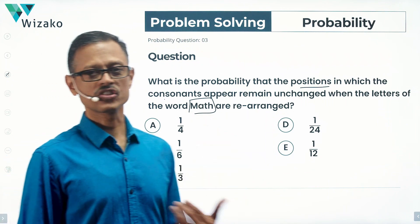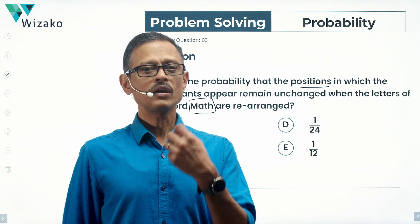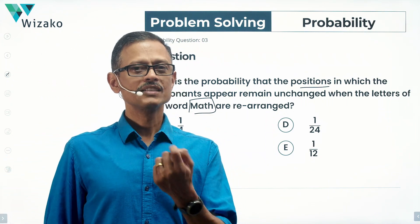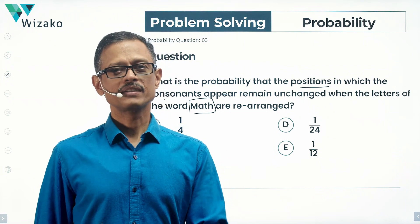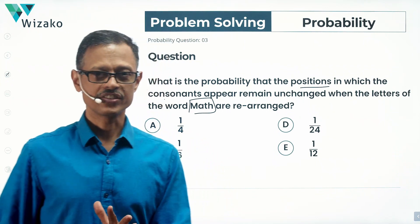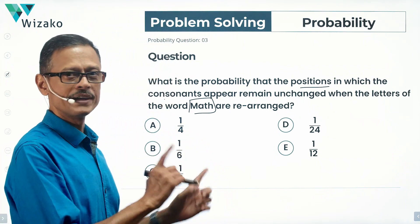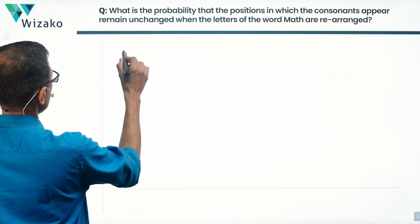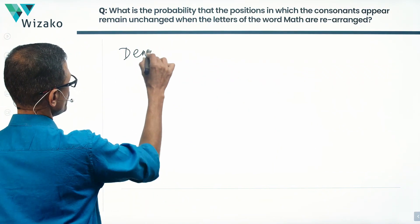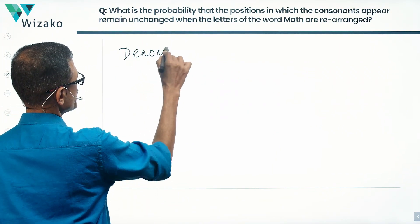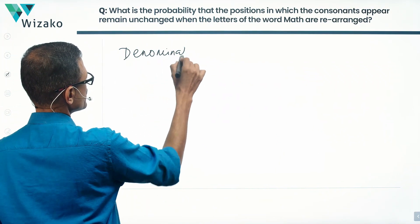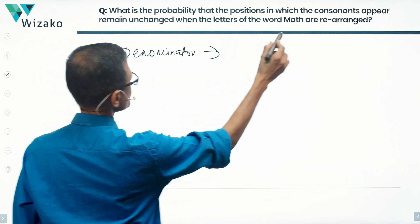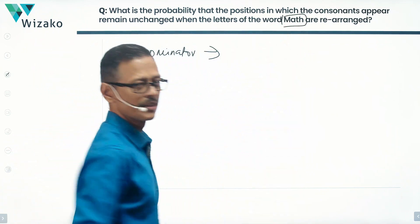We're going to rearrange the letters of the word MATH. We want to find the probability that the positions in which the consonants appear remain unchanged. It's a probability question, so we need to compute a denominator and a numerator. Let's start with the denominator, which is the total number of ways in which the letters of the word MATH can be reordered.